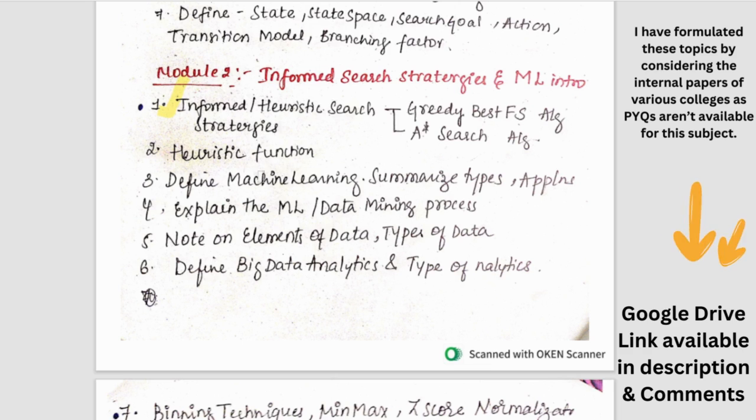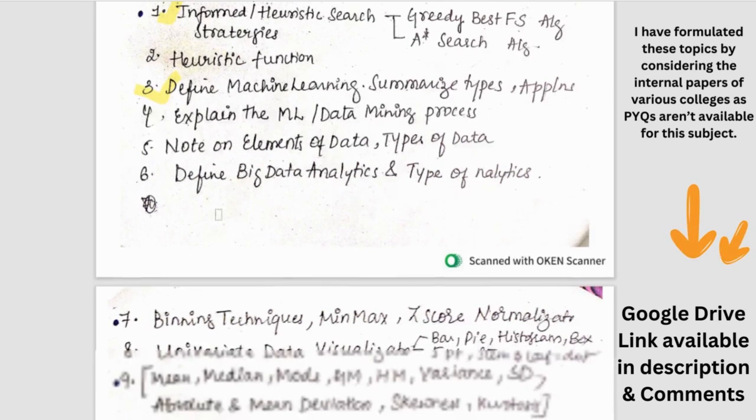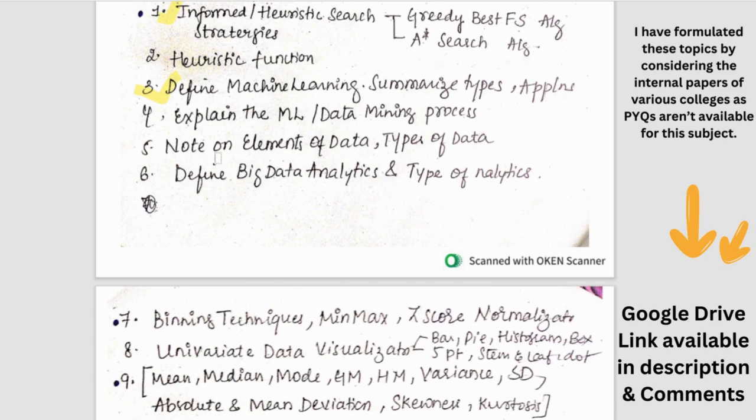Then we have definition of ML, its types and applications. So this could be asked. And then the ML or data mining process - there are 5 to 6 steps. So you need to explain that. Then we have elements of data and types of data. Even this could be asked. And then definition of big data analytics and types of analytics. This is also an important question.